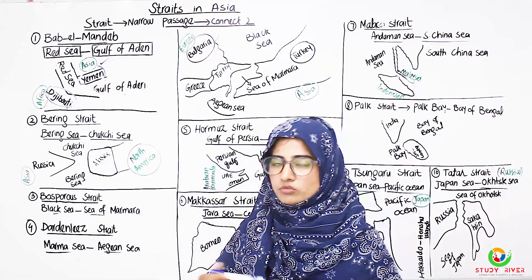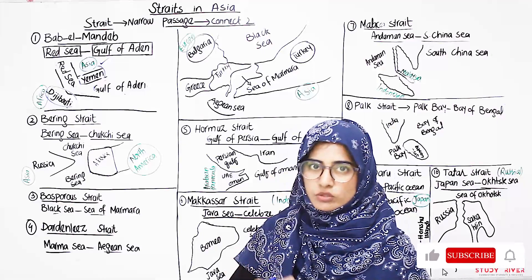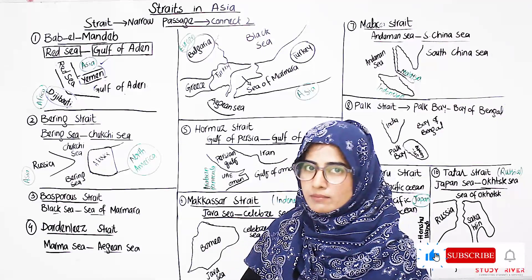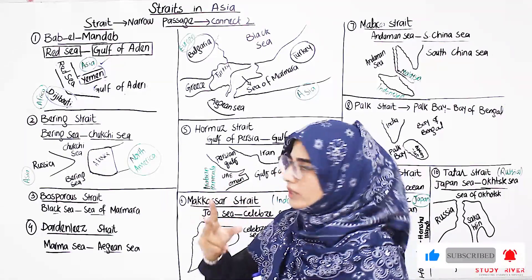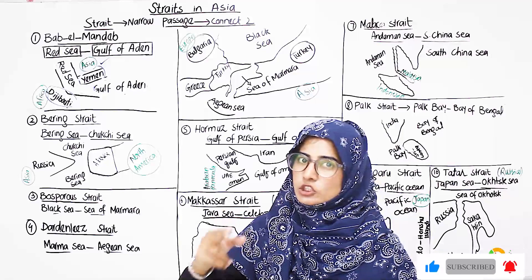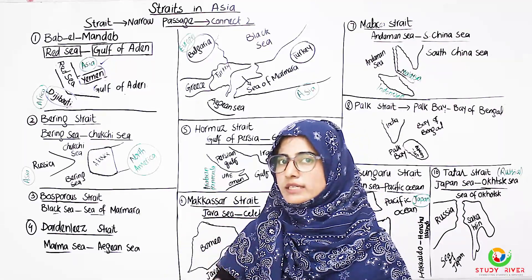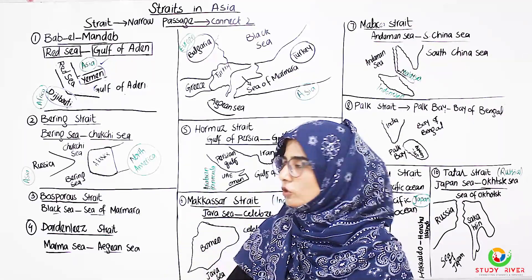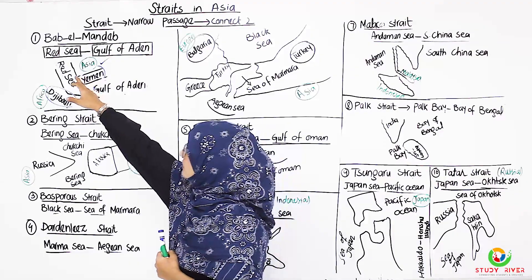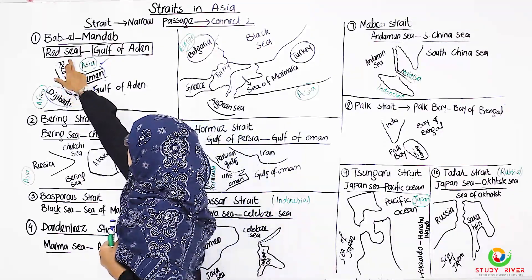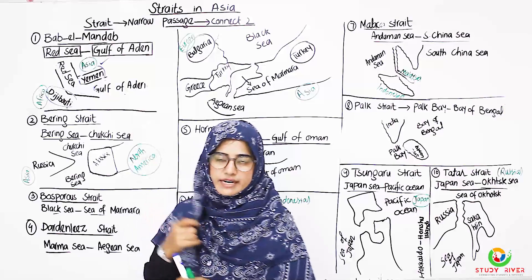First of all, we will see which water bodies are connected. One side is the Red Sea and the other side is the Gulf of Aden.